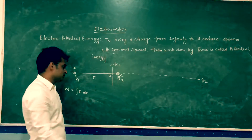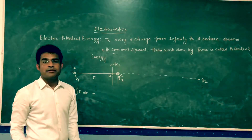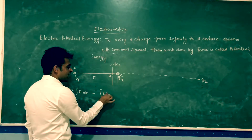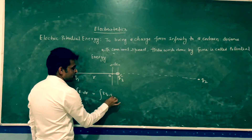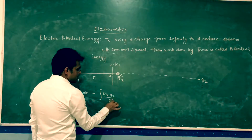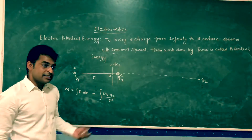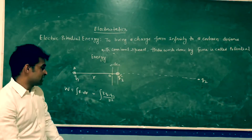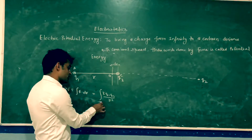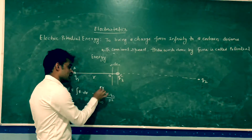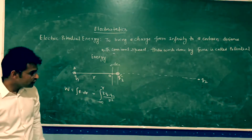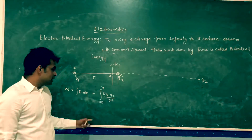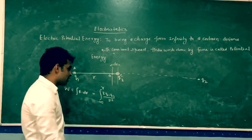We know F equals k q1 q2 divided by r², because it's an electrostatic force. In place of F, I write k q1 q2 divided by r². The integration limits are from infinity to r, since by definition we bring the charge from infinity to a certain distance r. This work done, by definition, gives us the potential energy.